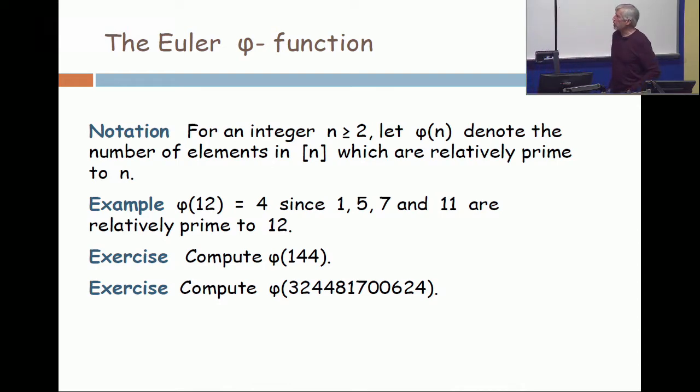So for an integer n at least 2, let φ(n), the Euler Phi Function, denote the number of elements in [n] which are relatively prime to n. Notice I have greatest common divisor 1. For example, φ(12) = 4, because look at the numbers from 1 to 12—which ones are relatively prime to 12? I think it's 1, 5, 7, and 11. All the others have a common factor with it.